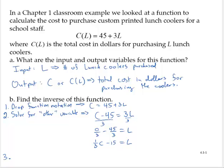And the third step, I know I said 4 earlier, that was an error. The third step is to rewrite using function notation. And we'll now write this as L(C). So L(C) = (1/3)C - 15.